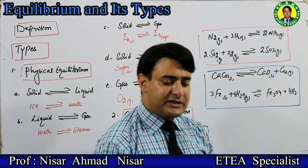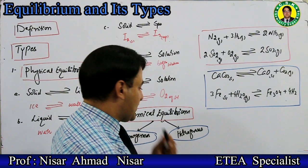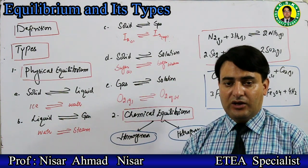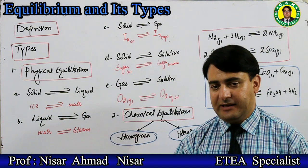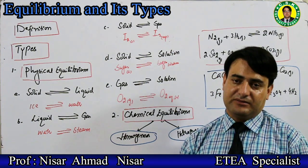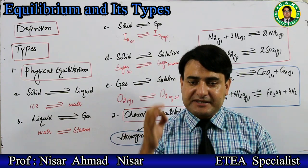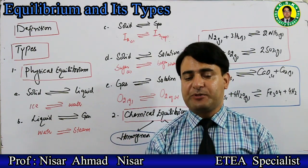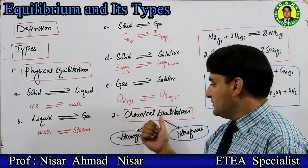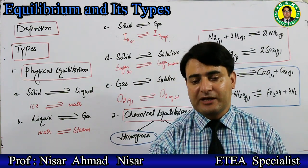Our chapter is related to chemical equilibrium. What is chemical equilibrium? When equilibrium exists between different chemical species, such equilibrium is called chemical equilibrium.